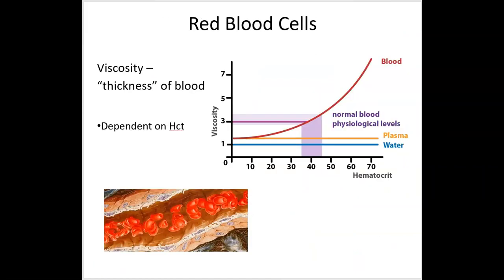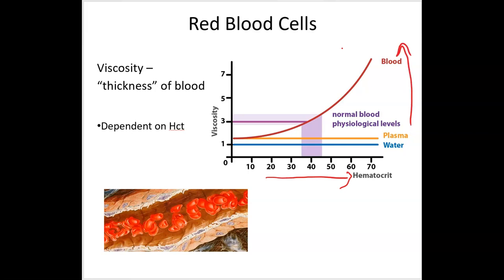If we look at these red blood cells — basically a bag of hemoglobin — what really determines blood viscosity is the amount of water in your blood. When you're dehydrated, your blood is thicker; if very hydrated, it's thinner. However, it's also a factor of your hematocrit. As hematocrit increases, the blood becomes more viscous. If there are too many red cells, the blood becomes thicker, making it more difficult to flow through capillaries and smaller vessels.